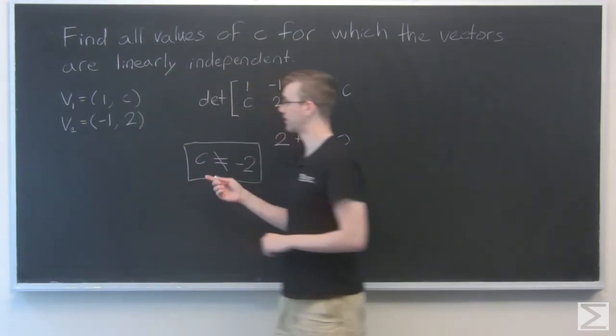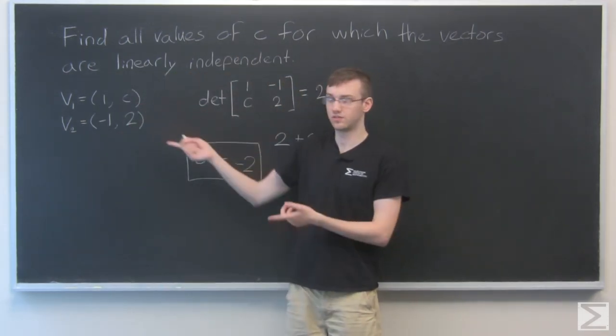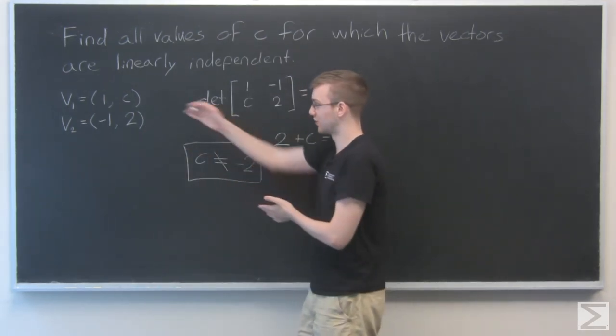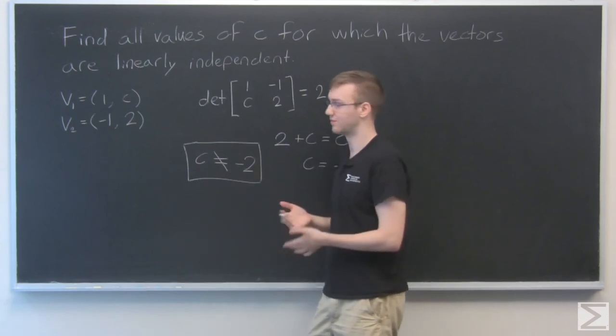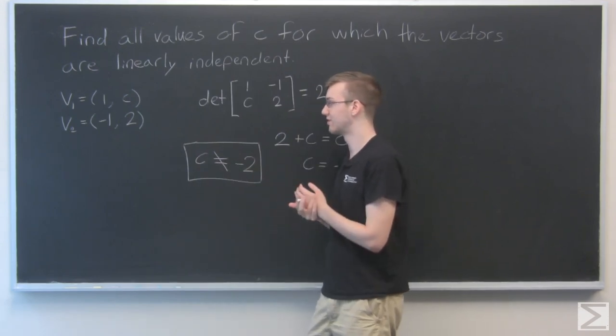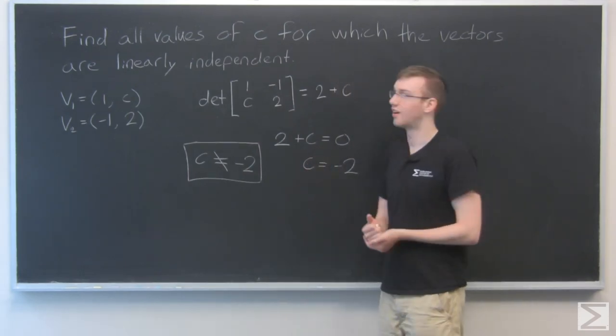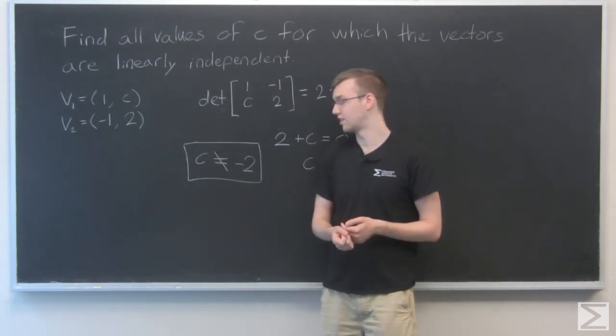And this makes sense, right? Because if C is minus 2 in these two vectors, you can see that they're just minus 1 multiplied by each other. They're just the same vector multiplied by a constant. So any other value besides that, we're good: C not equal to minus 2.